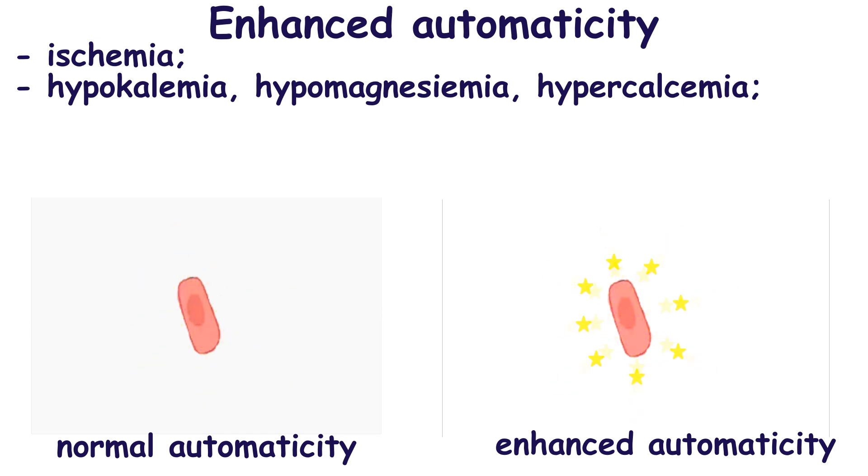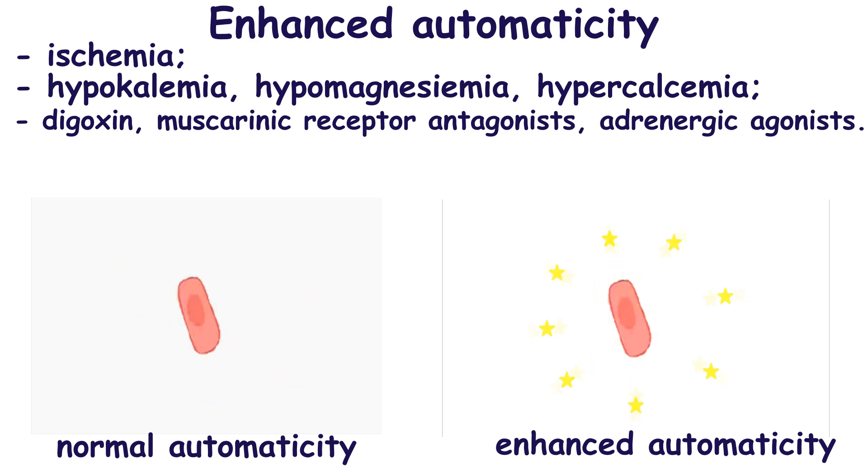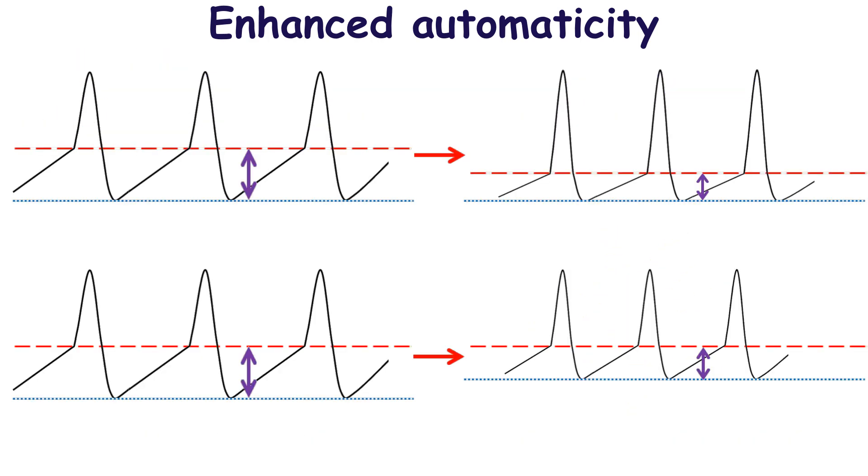Other causes of enhanced automaticity include digoxin, muscarinic receptor antagonists, and adrenergic agonists. These conditions may change the membrane potential, either a negative shift in the threshold potential or a positive shift in the maximum diastolic potential, leading to approaching of the threshold for depolarization and the diastolic potential.